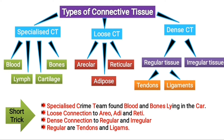So the types of connective tissue — first of all we need to understand what connective tissue means. Connective tissue is a tissue which connects muscles to different parts of the body, or which binds to form a framework of our body.